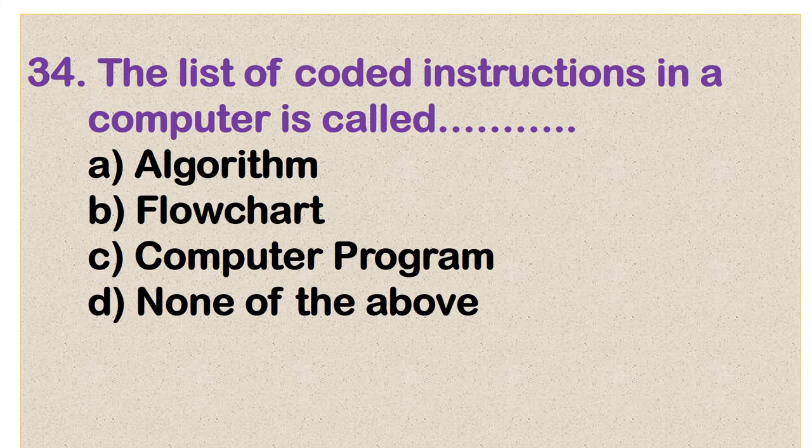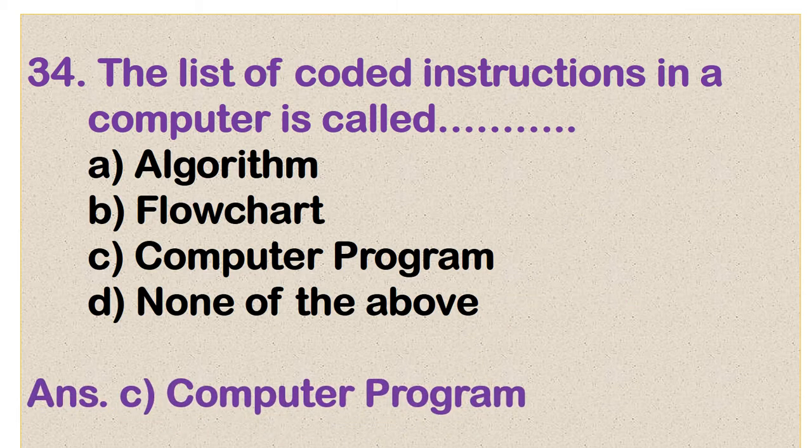Question number 34: The list of coded instructions in a computer is called algorithm, flowchart, computer program, or none of the above. Here the correct answer is option C: computer program.